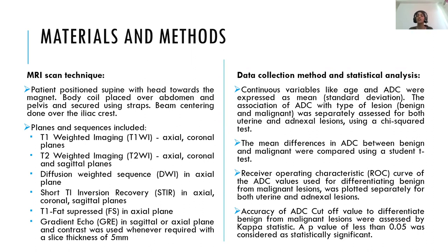Continuous variables like age and ADC were expressed as mean and standard deviation. The association of ADC with type of lesion was assessed for both uterine and adnexal lesions using a chi-square test. Mean differences in ADC between benign and malignant lesions were compared using a Student T-test. ROC curves of ADC values for differentiating benign from malignant lesions were plotted separately for uterine and adnexal lesions. Accuracy of ADC cutoff values was assessed by kappa statistic, and a p-value less than 0.05 was considered statistically significant.